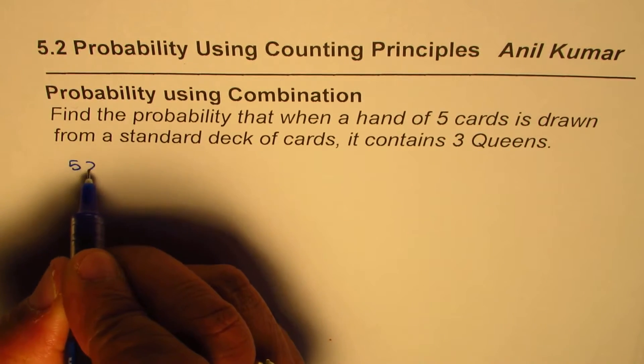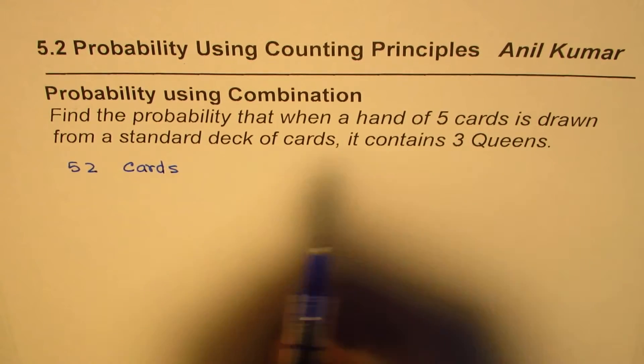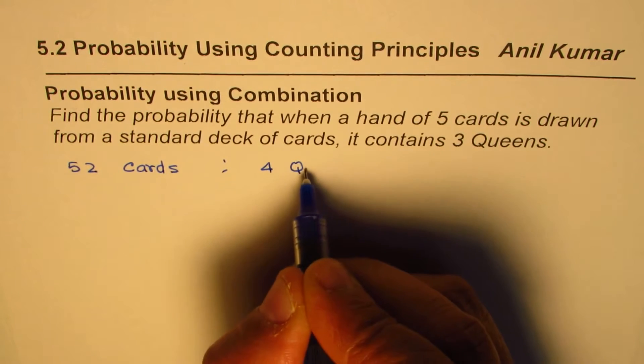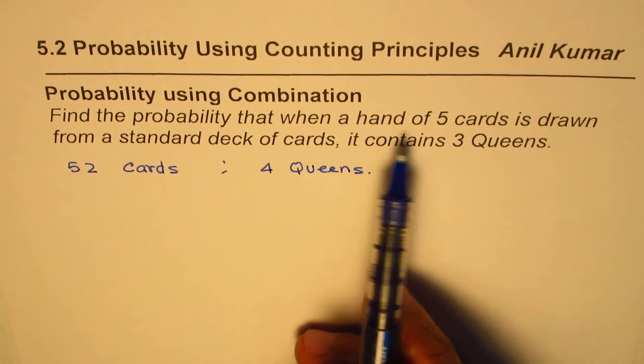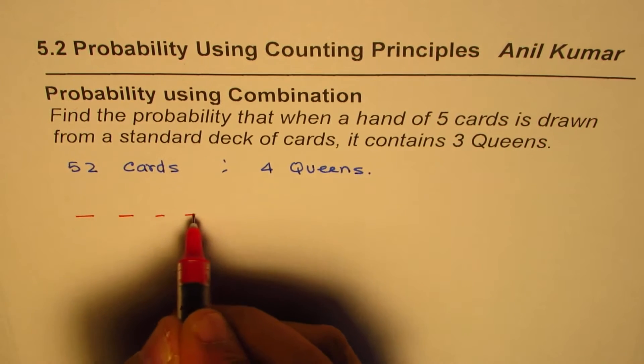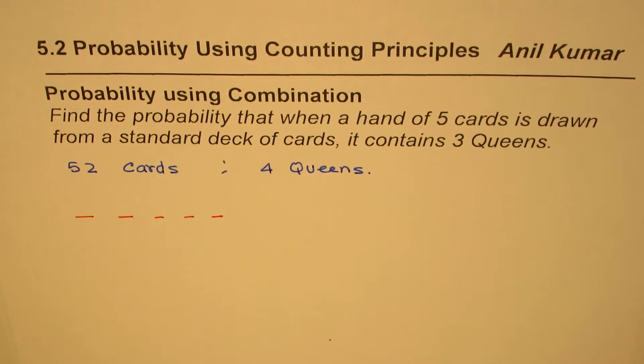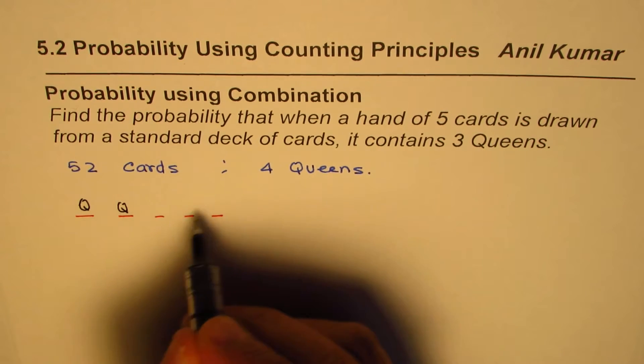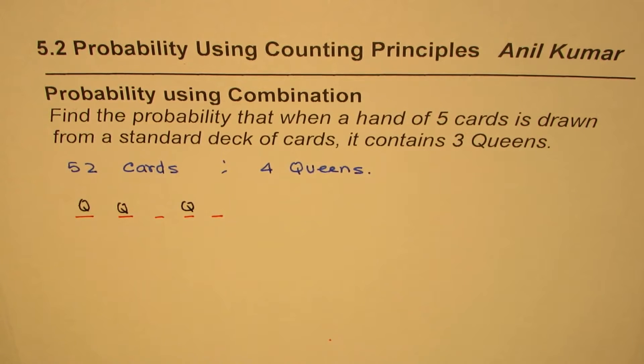In a deck of standard cards we have 52 cards, and amongst those 52 cards we have 4 queens in all. When we say we have a hand of 5 cards, it means we have 1, 2, 3, 4, 5 cards. In the hand of 5 cards which we have drawn, we need 3 queens. Three queens could be placed anywhere - the order really doesn't matter. We just need 3 out of 5 to be queens.